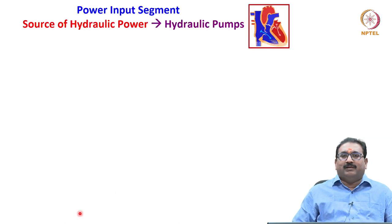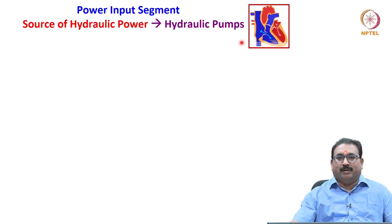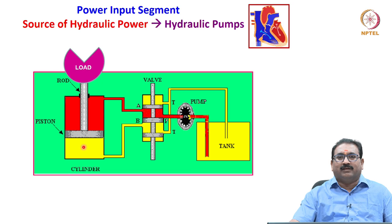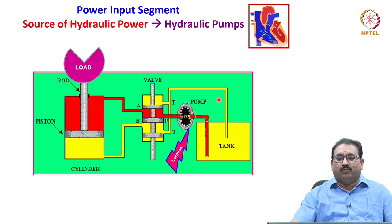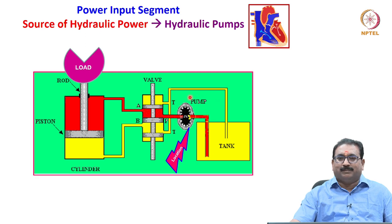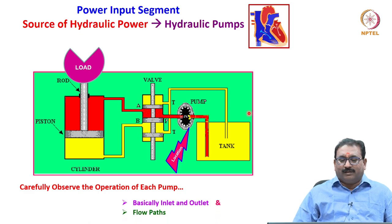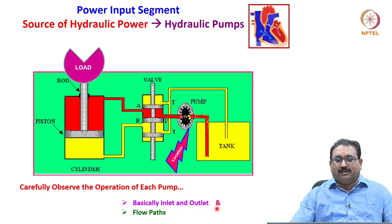The power input segment — what you can call the source of hydraulic power or pressure — is the hydraulic pump. Looking at the schematic diagram here, which consists of the basic elements: oil reservoir or tank, a pump, valves, and actuator with a load. Please understand the location of the pump. Exactly above the tank is the hydraulic pump, driven through the prime mover — an electric motor or IC engine. Carefully observe the operation of each pump in the next slide, and please concentrate mainly on the inlet, outlet, and flow paths.